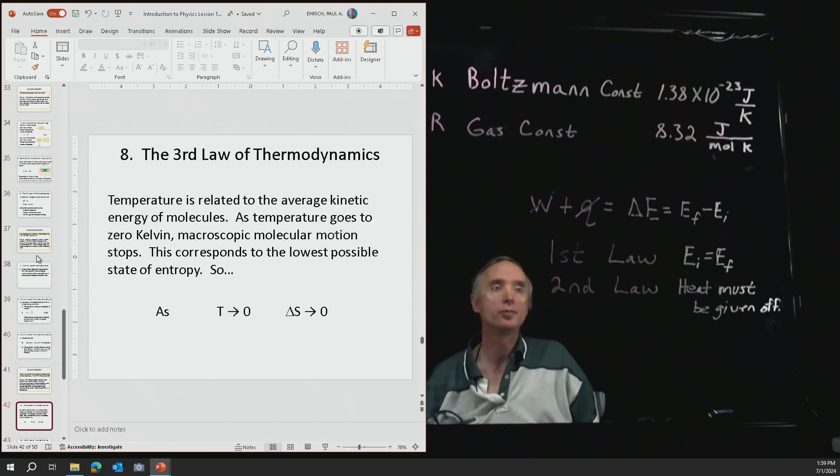All right, so we've done the first law of thermodynamics, the second law of thermodynamics, let's do the third law. So the third law of thermodynamics is going to say that as the temperature of a system goes to zero, its change in its entropy will go to zero.